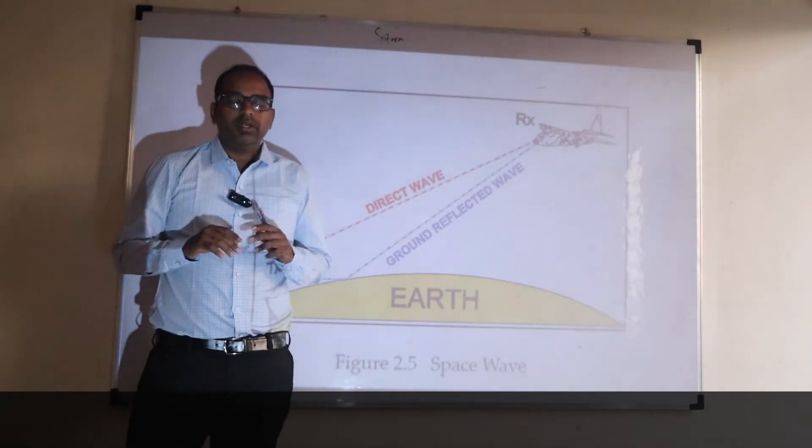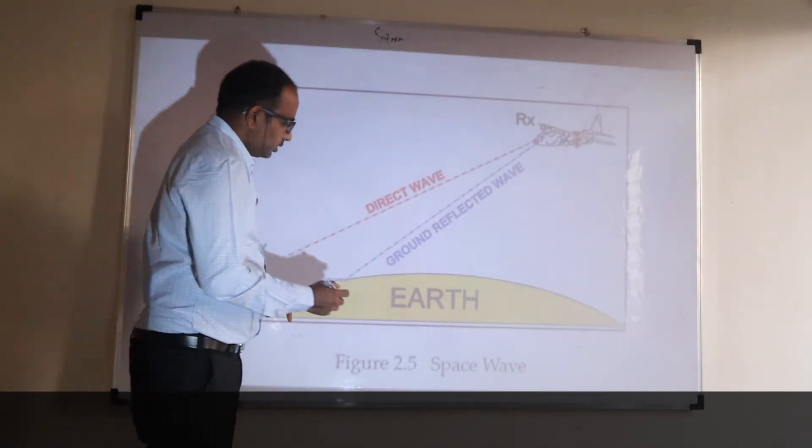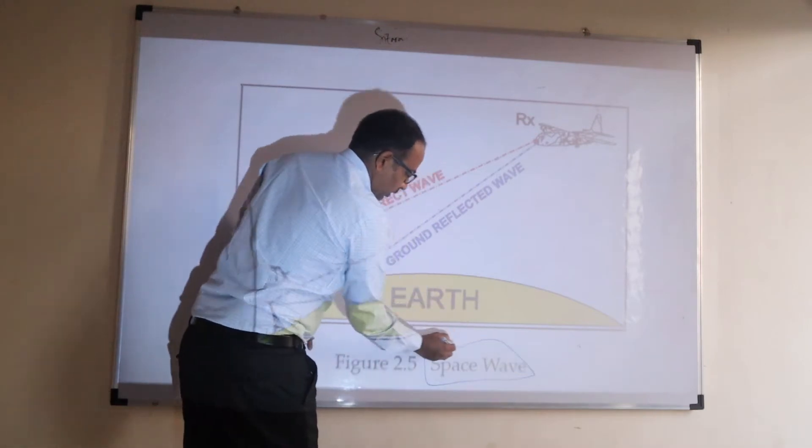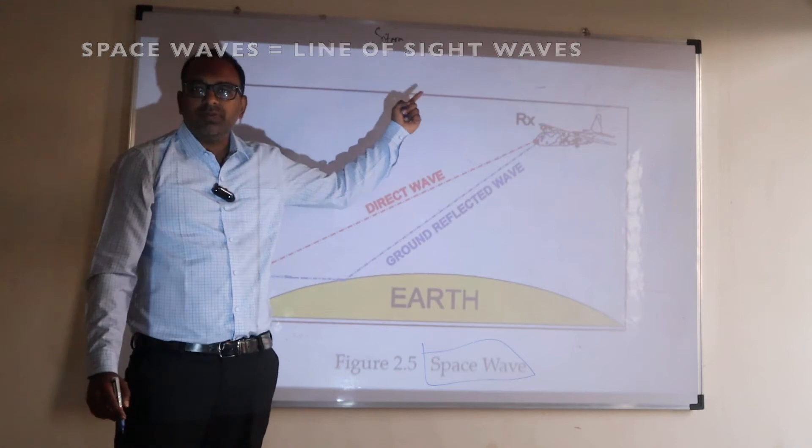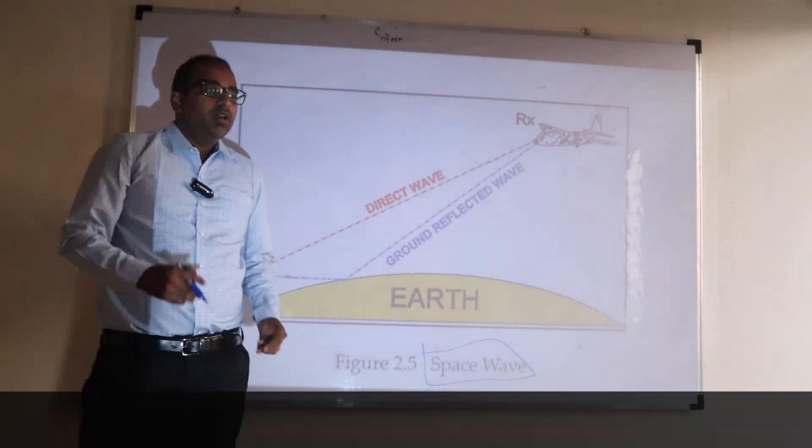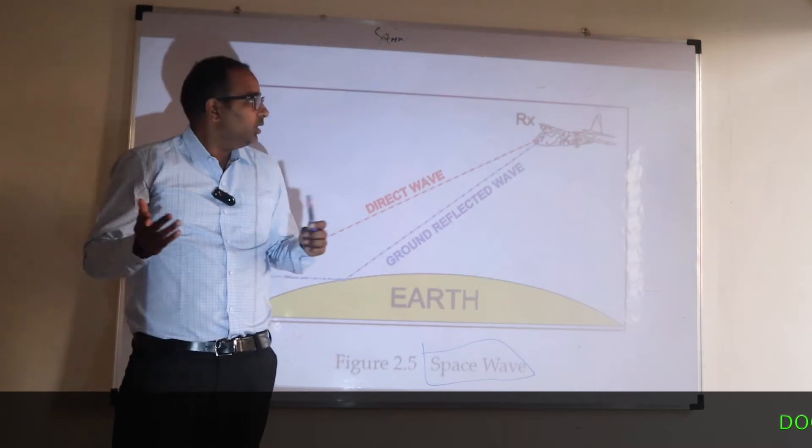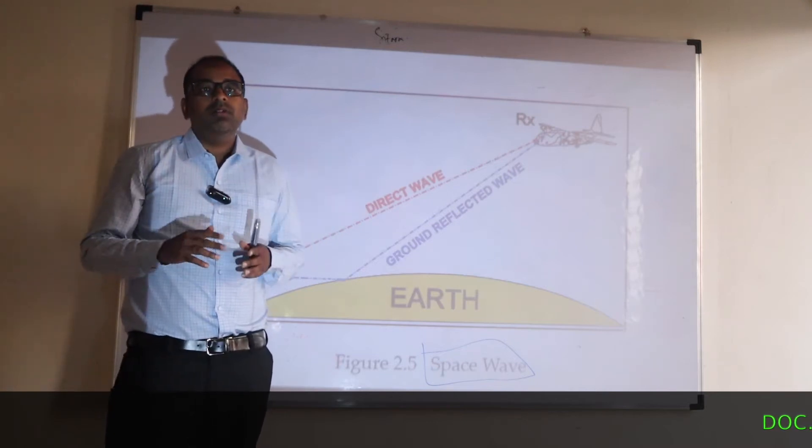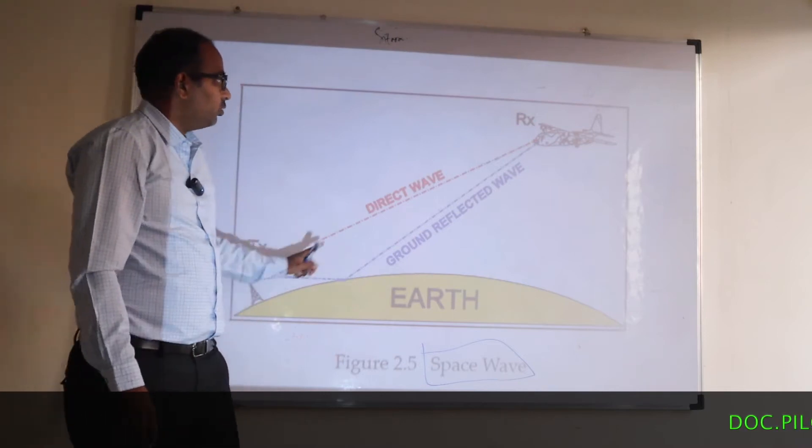Coming to the second types of waves, these are called space waves. Now the question is, they are not from space, they are not going to space, why are they called space waves? What happened was, after they discovered radio magnetic waves and they put into application, they discovered aircrafts and they wanted to communicate from ground to aircraft.